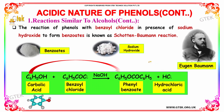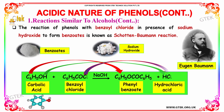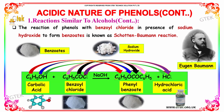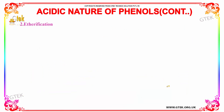The reaction of phenols with benzoyl chloride in the presence of sodium hydroxide to form phenyl benzoate is known as the Schotten-Baumann reaction. When carbolic acid reacts with benzoyl chloride along with NaOH, it forms phenyl benzoate and hydrochloric acid.